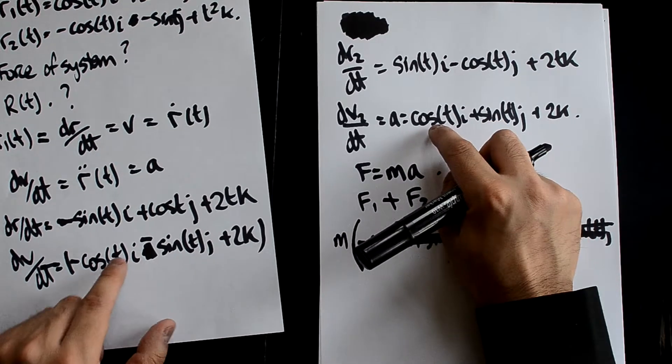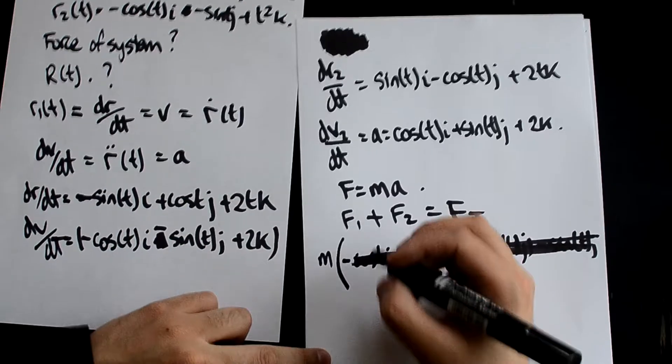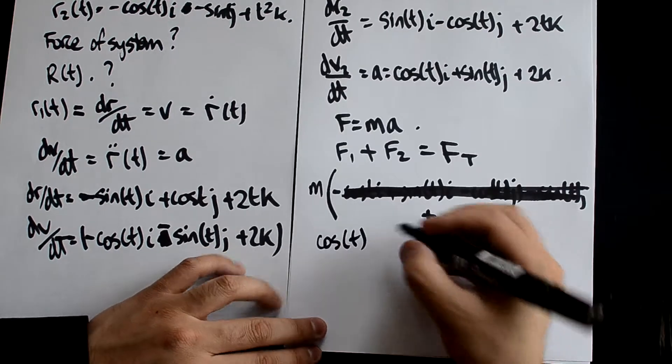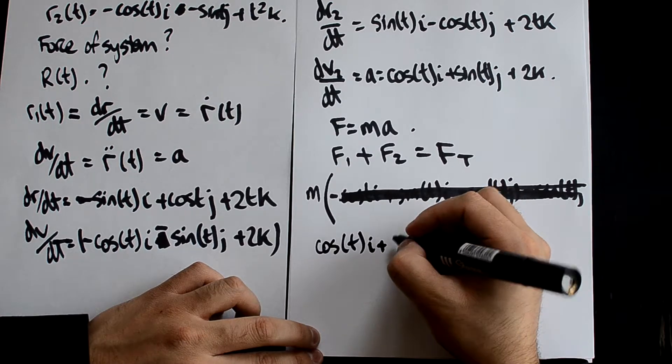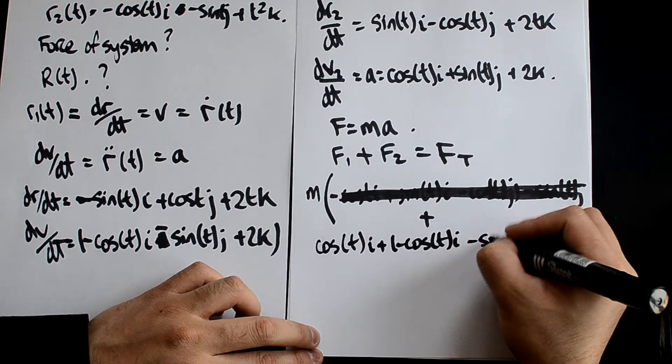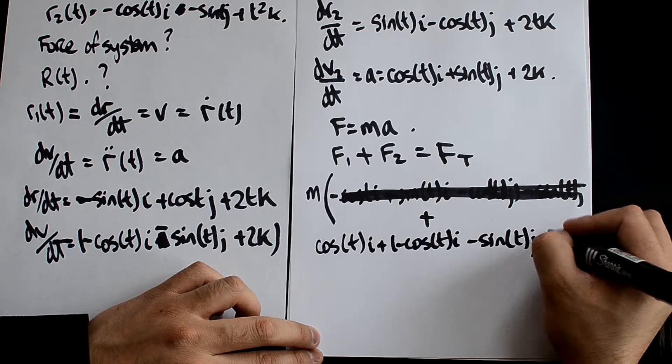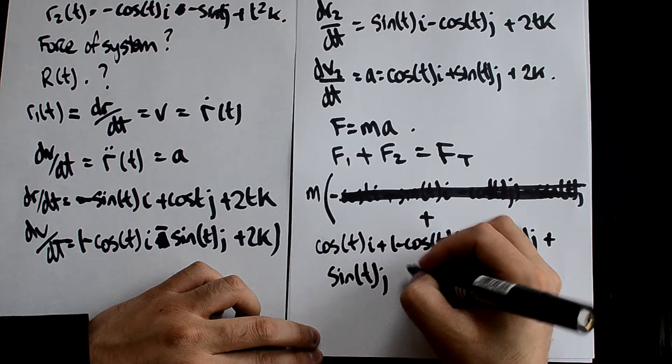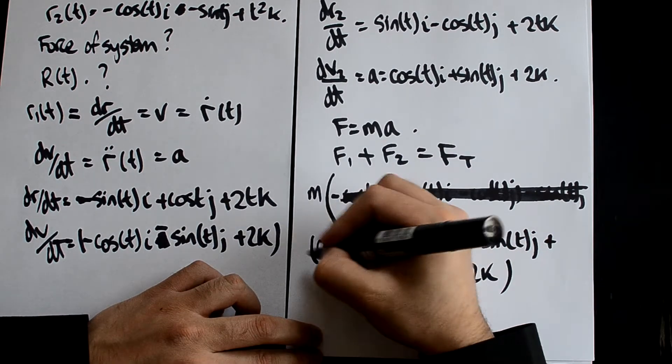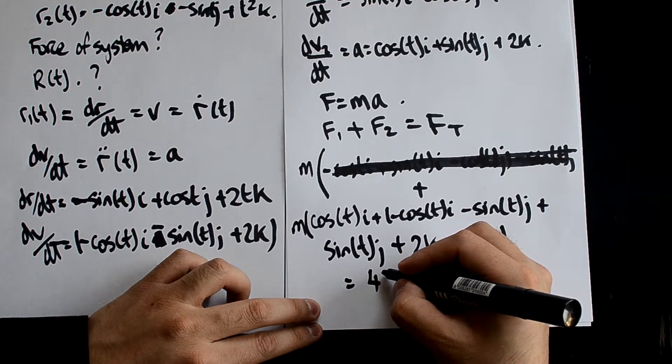So it's going to be this and this added together, this and this added together, and this and this added together. So we're actually going to get cos(t)i plus minus cos(t)i minus sine(t)j plus sine(t)j. And then you have 2k and 2k, so it's going to be 2k plus 2k, all multiplied by M. So this is going to equal 4kM.